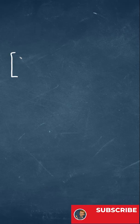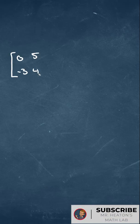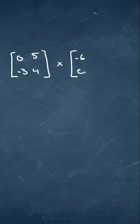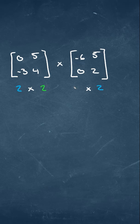When you multiply matrices, you're taking a look at what the number of rows and columns for each matrix is. For this example, we have a 2 by 2 multiplied by a 2 by 2. The numbers in green represent the innermost numbers, and those numbers must be the same for us to be able to multiply.